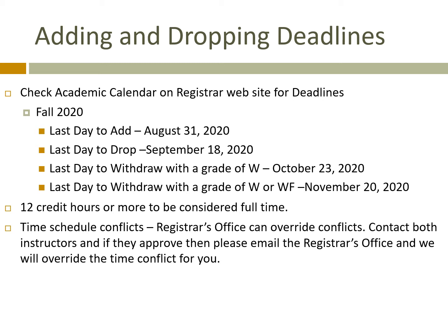The W or WF withdrawal do not impact your grade point average. So if you decide to withdraw from a class instead of receiving a possible failing grade, it will not impact your GPA. You must have 12 credit hours or more to be considered full time. Sometimes there are legitimate schedule conflicts — you cannot override those on MySlice, but the Registrar's Office can. If you have permission from both instructors, send the Registrar's Office an email and we will gladly override the time conflict and register you for the classes.